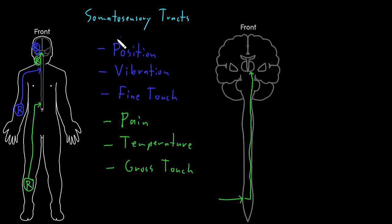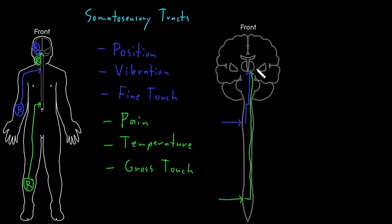The same contralateral destination is true for the other category — position sense, vibration sense, and fine touch sense. With information coming in from an arm, a different tract carries that information upward, but it crosses at a slightly different place, a little higher up in the brainstem. It then continues up to the same deep region of the cerebral hemisphere on the opposite side from where the information originated.